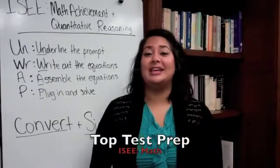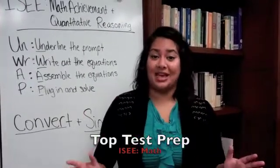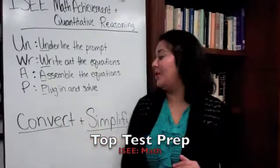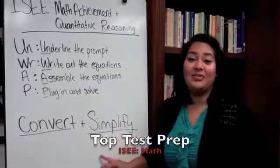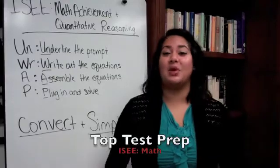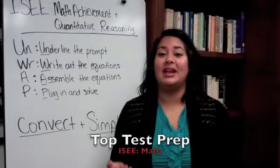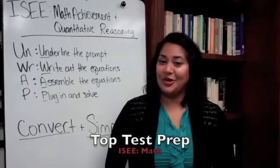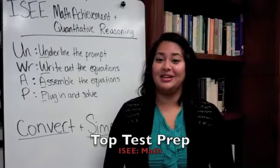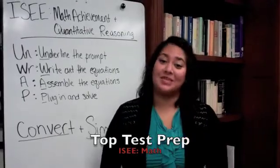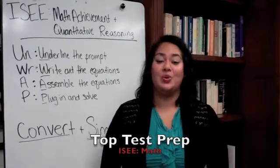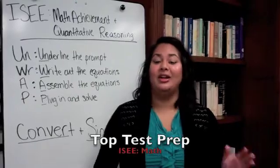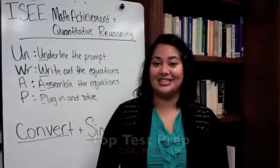And the last thing is for the entire math section: always, always, always remember to simplify. If you solve a problem and you find that x equals 2 fourths, will you see 2 fourths as an answer? Never, because it can be simplified to 1 half. So definitely remember that in all of the math sections you do on this test.